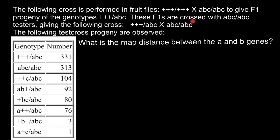The F1 generation is crossed with a test cross parent. We call this a test cross because this parent is homozygous recessive for each allelic pair — recessive A, recessive A, recessive B, recessive B, recessive C, recessive C. So this organism is homozygous recessive for three allelic pairs, which is why we call it a test cross.